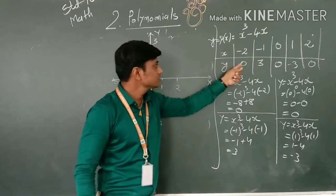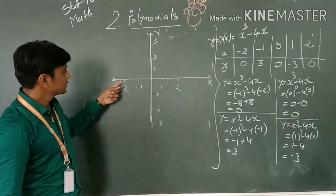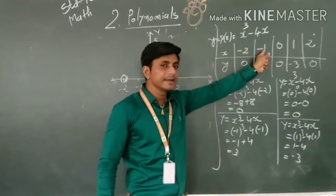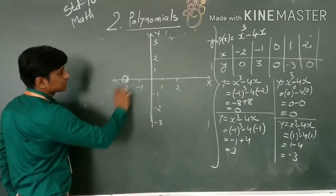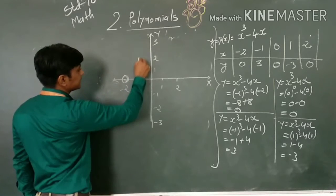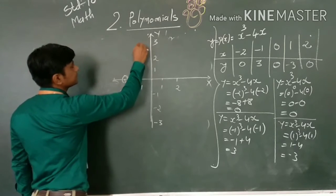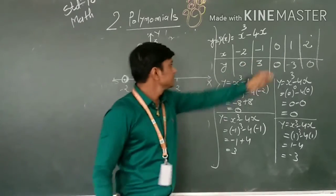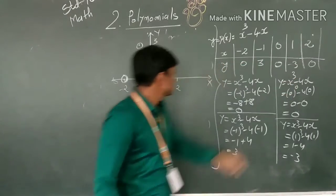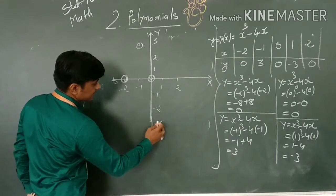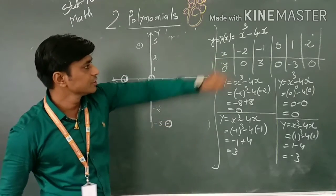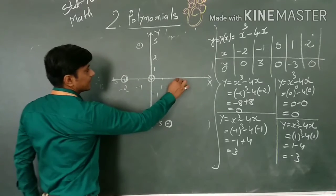Our first point is (−2, 0) — that means this point on the x-axis. Second point is (−1, 3) — the intersection of −1 and 3 is here. Then (0, 0), which is the origin. Next, (1, −3) — that means 1 on x and −3 on y, so it's here. And our last point is (2, 0), which lies on the x-axis.